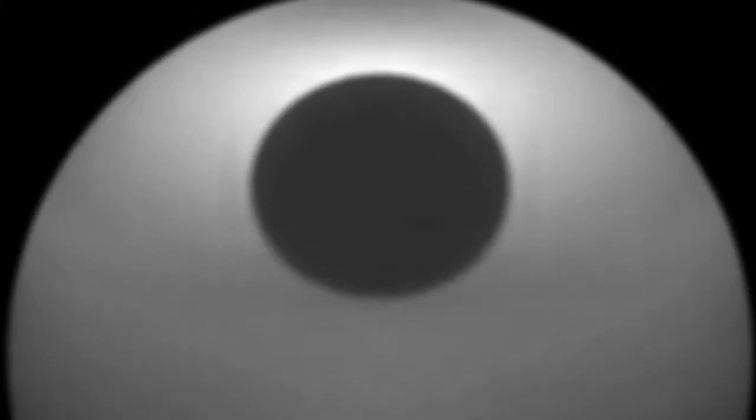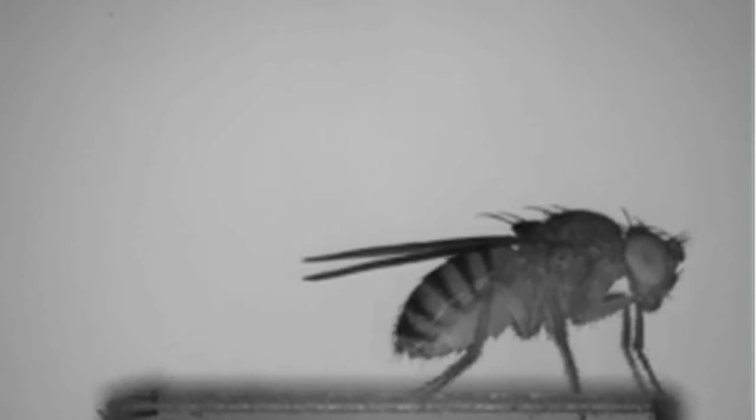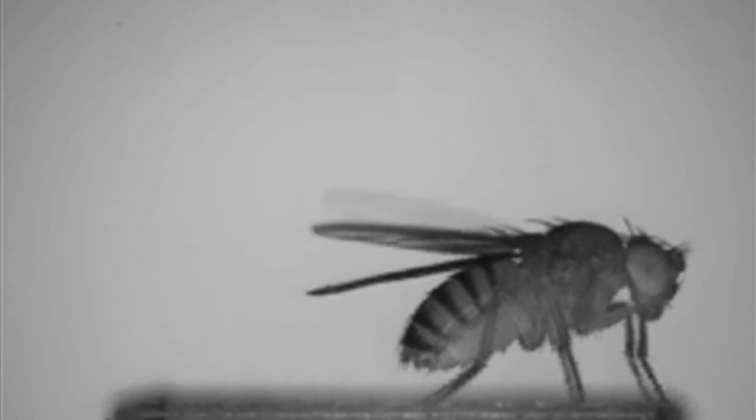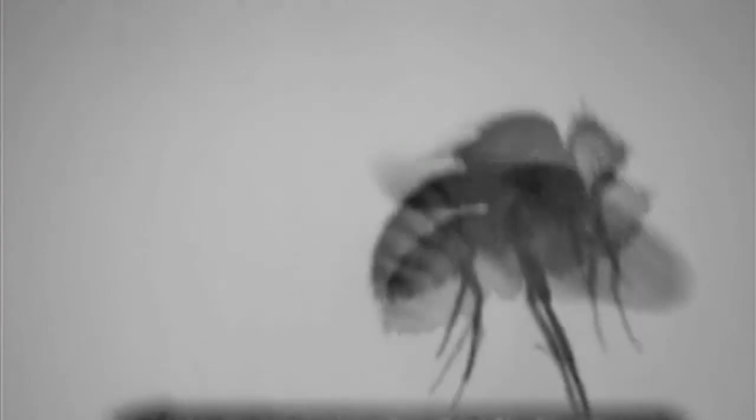The fly first stops whatever it's doing in a freeze. It will then adjust its legs in a very precise way. It then raises its wings to get ready to take off, and then in a final movement, it will stroke down its wings, kick with its legs, and jump into the air and start flight.